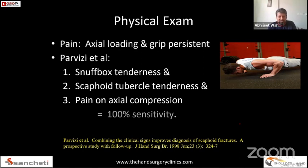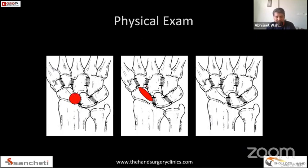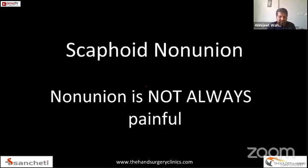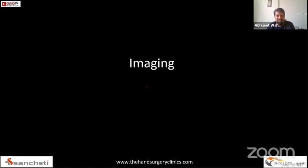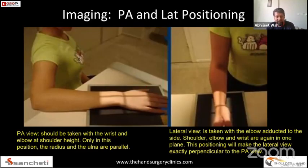Physical examination in patients presenting with non-union usually reveals restriction of movements and pain on strenuous work. Javad Parvizi, in 1998, noted that tenderness in the anatomical snuff box, tenderness of the tubercle, and pain on axial compression have 100% sensitivity for diagnosing scaphoid fractures. However, the irony is that most scaphoid non-unions may not be painful — which is where the catch lies — so a high index of suspicion is needed when these patients present to clinic.